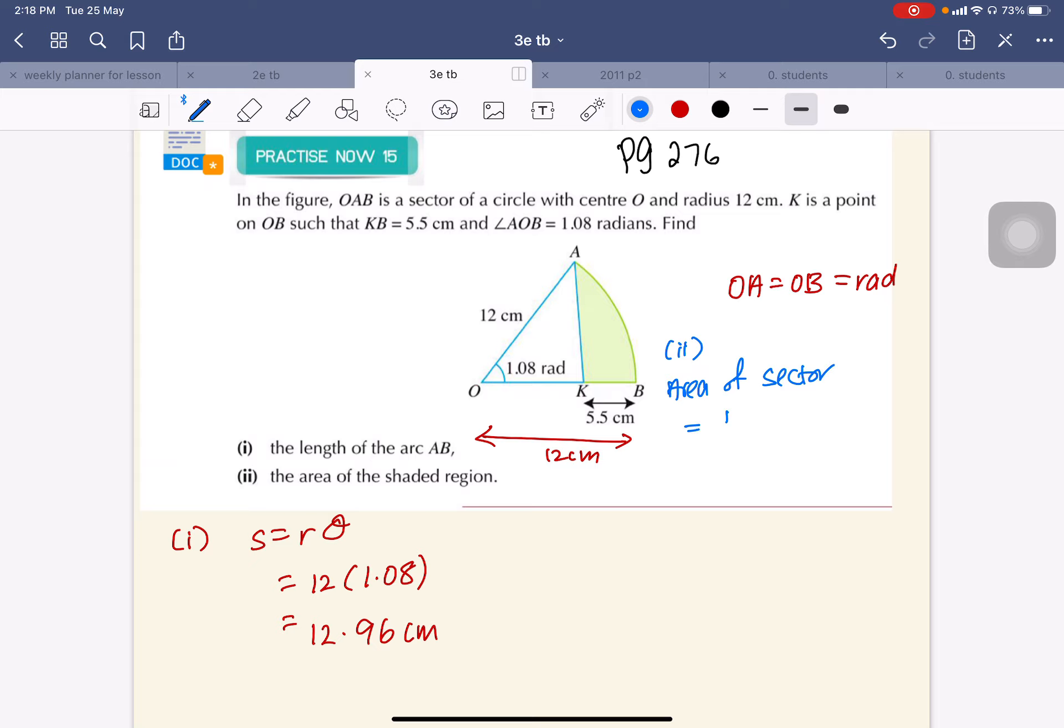Again, the formula is half r squared theta. Now, there's no sine, cosine, or tangent, so it's okay if your calculator is not in radian mode.